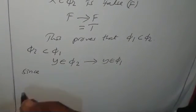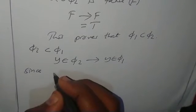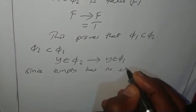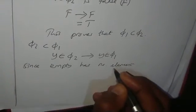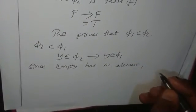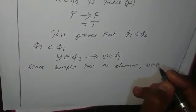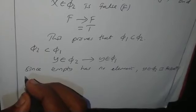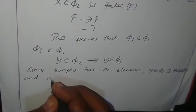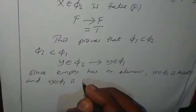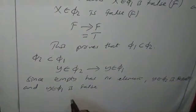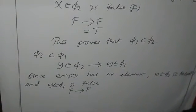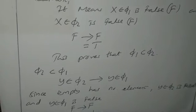From the definition of empty set, an empty set has no element. Therefore, the statement 'Y is an element of empty set two' is false, and also the statement 'Y is an element of empty set one' is false. Our implication becomes false implies false, which from the definition of implication also gives a truth value of true.